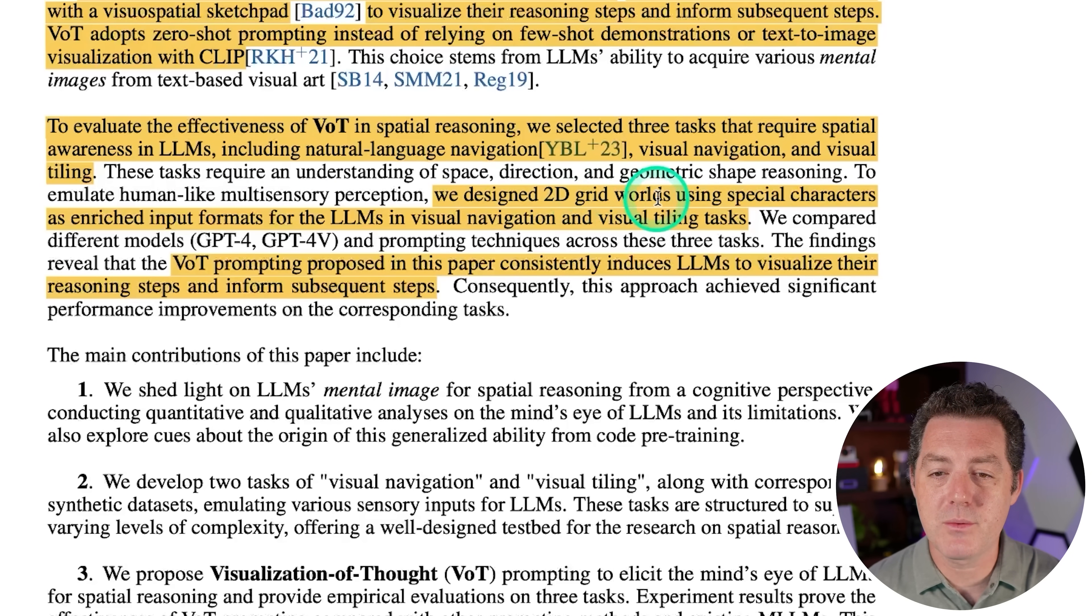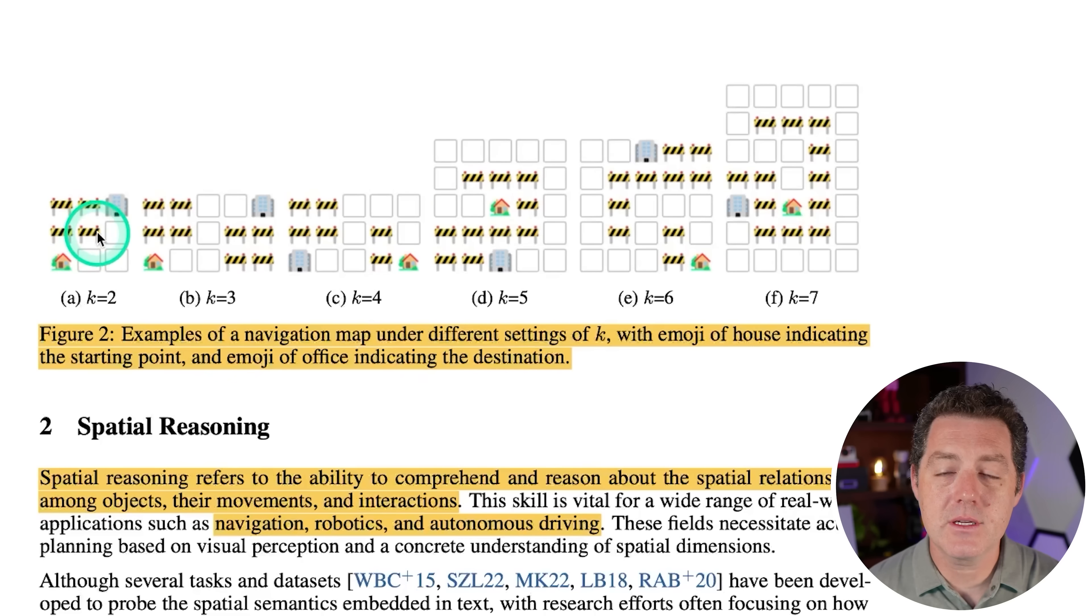VOT adopts zero shot prompting instead of relying on few shot demonstrations or text-to-image visualization with CLIP. To evaluate the effectiveness of VOT and spatial reasoning, we selected three tasks that require spatial awareness in LLMs, including natural language navigation, visual navigation, and visual tiling. And I'll explain what all three of those things are. We designed 2D grid worlds using special characters as enriched input formats for the LLMs and visual navigation and visual tiling tasks. Now remember, large language models can't interpret graphs. Like if we were to put together a 2D tile and just pass it to the large language model, it wouldn't really understand it. We have to represent that 2D space with natural language and you'll see how they do it.